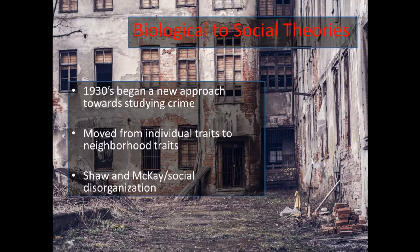As the 1930s came along, it was the time of the industrial era, and cities started to expand. There was a lot more commerce and such. And sociologists started looking at different ways to study crime. This theory, particularly Social Disorganization Theory, started in the city of Chicago.